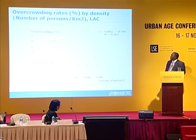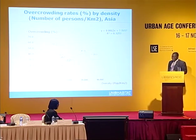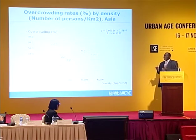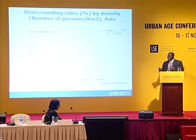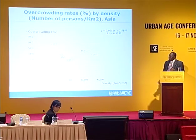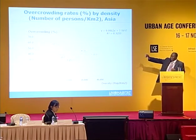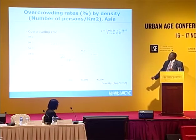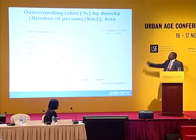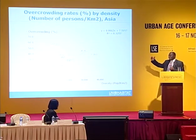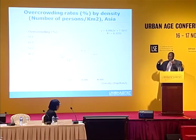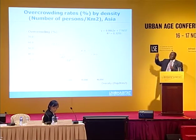Asia is interesting. There is a different trend — there is a relationship, but it's not 100%. About 30% of overcrowding can be explained by density. If you remove the capital of Cambodia from the data, the correlation drops from 57% to 45%, because Cambodia is somewhat of an outlier. So in Asia, there is a relationship, but it's not linear — density can contribute to overcrowding, but there are many other factors.